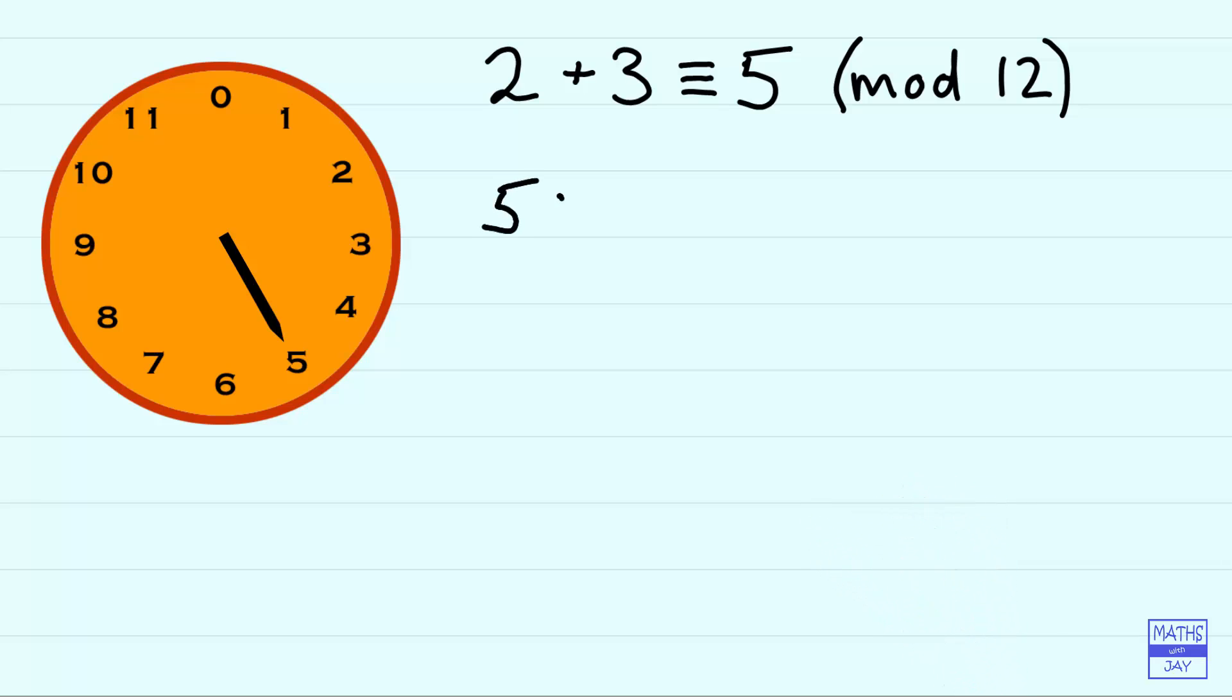So now let's add 4 onto 5. So 5 plus 4 is 9 just as if we were adding 4 hours onto 5 o'clock we would get 9 o'clock. So 5 plus 4 is congruent to 9 mod 12.